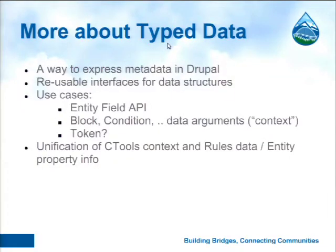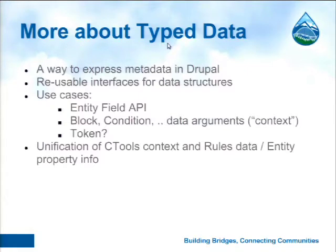The typed data API is a way to express metadata in Drupal. It allows you to define your data structure — define what your entity consists of — and then someone else can build a user interface for it. For example, if you have a custom entity, the Rules module can take that definition and display a dynamically built form based on your entity and its configurable fields. It is defined based on configuration and can be accessed at runtime at any level — if you have a field, you can access its definition; if you have an entity, you can do so as well.